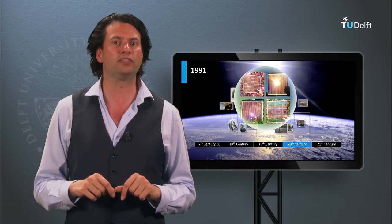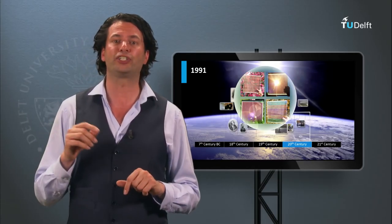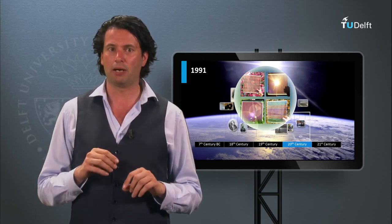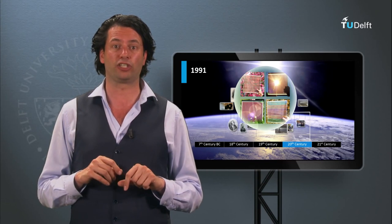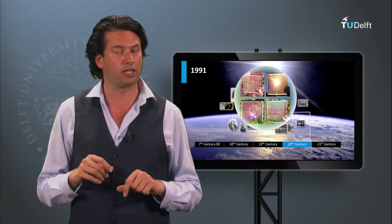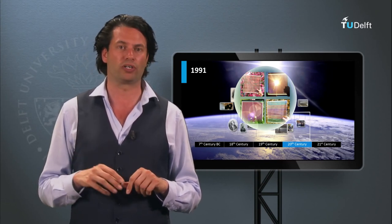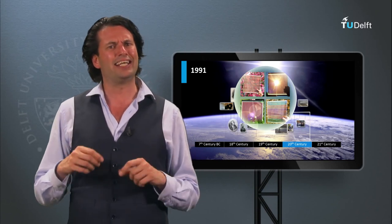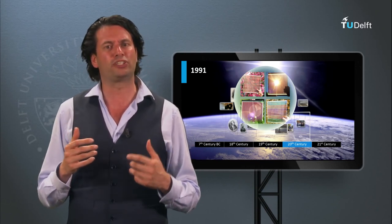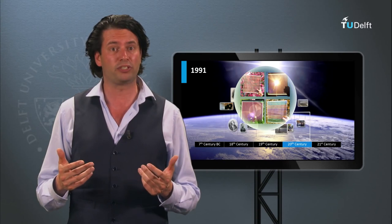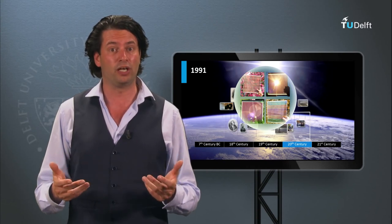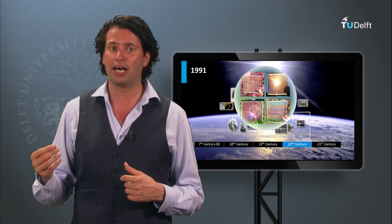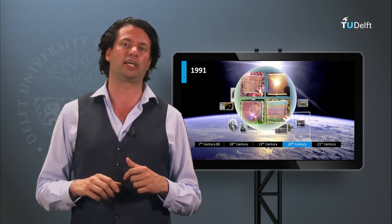In 1991 the first high efficiency dye-sensitized solar cell was published by the École Polytechnique Fédérale de Lausanne in Switzerland by Michael Grätzel and co-workers. The dye-sensitized solar cell is a kind of photoelectrochemical system in which a semiconductor material based on molecular sensitizers is placed between a photoanode and an electrolyte.